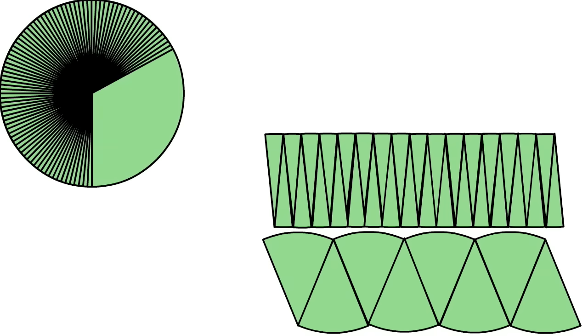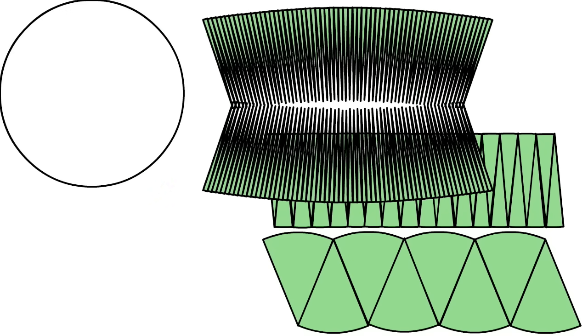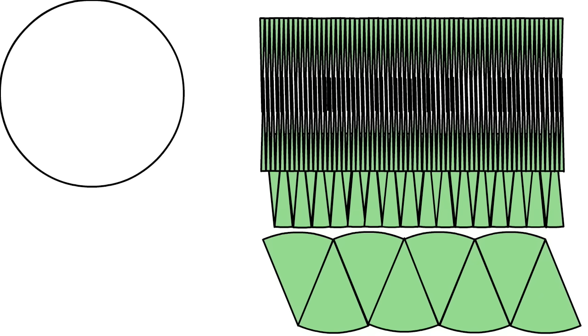So if we divide the circle into even smaller pieces, you can see that every time the shape becomes more like a rectangle.